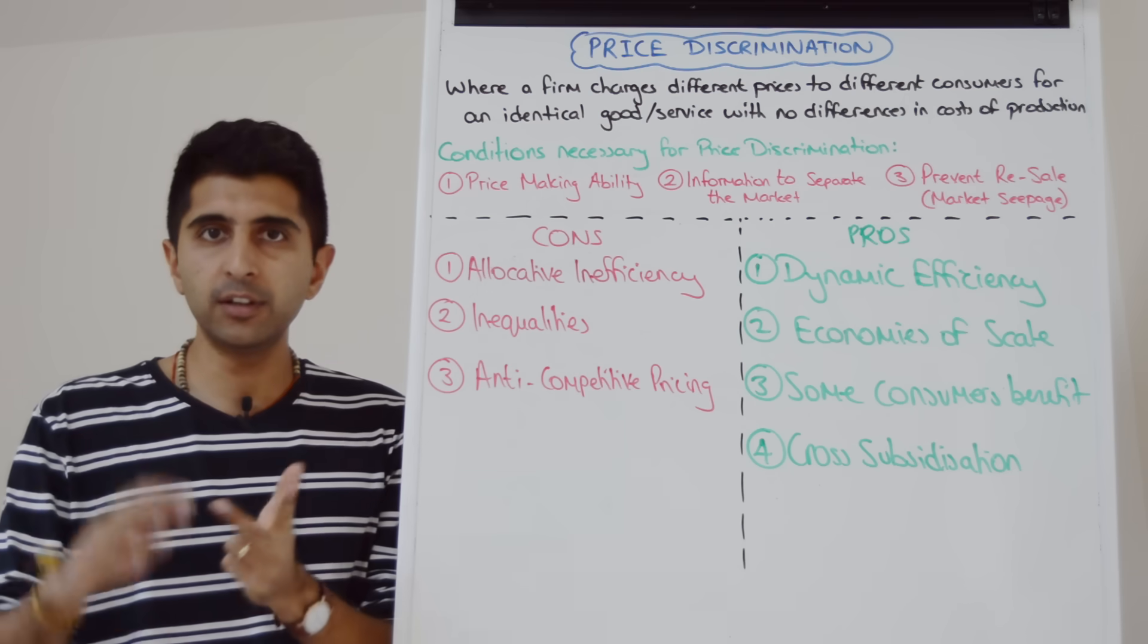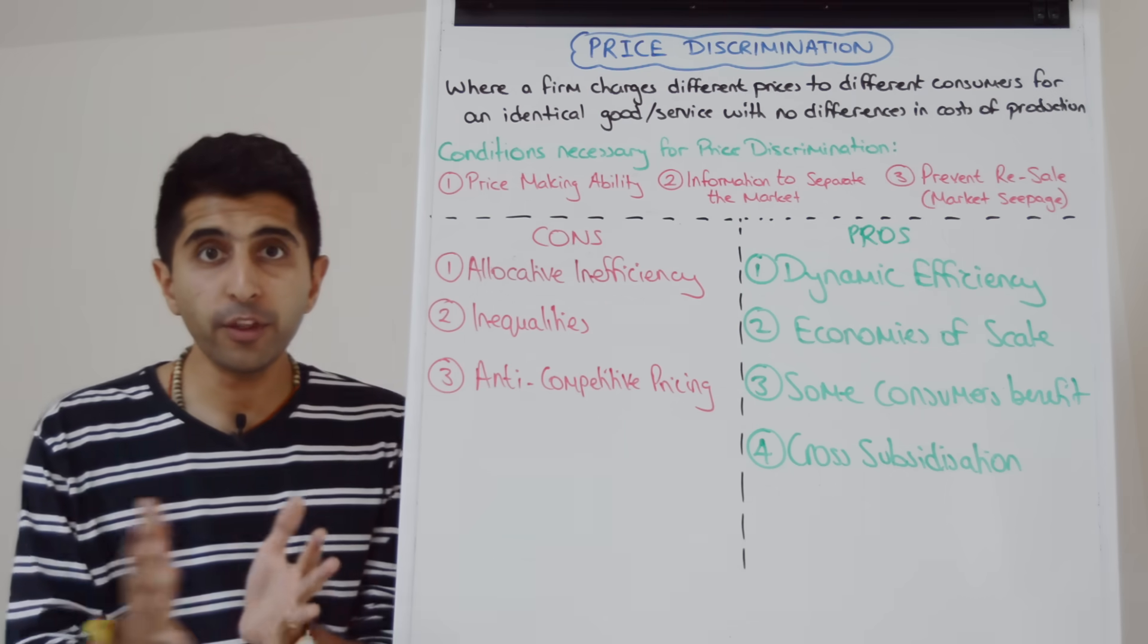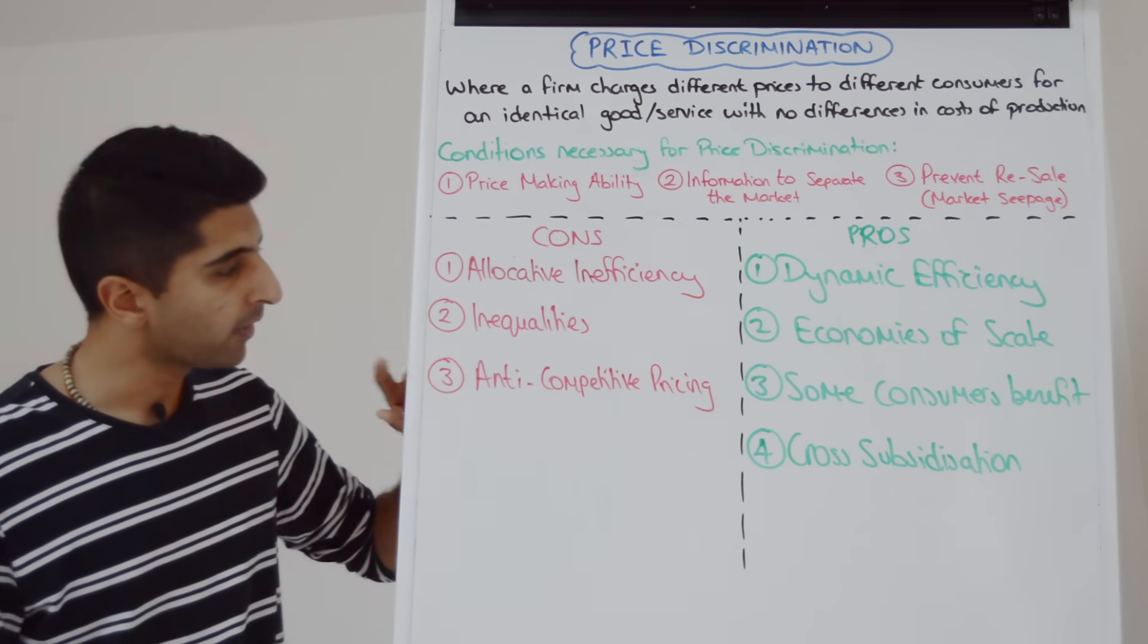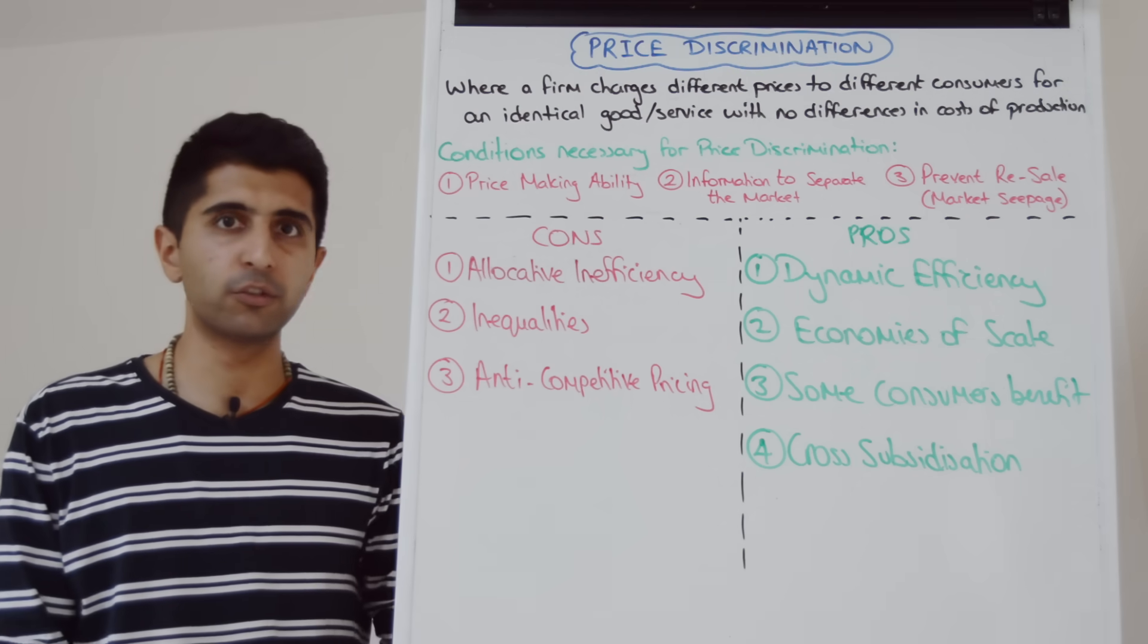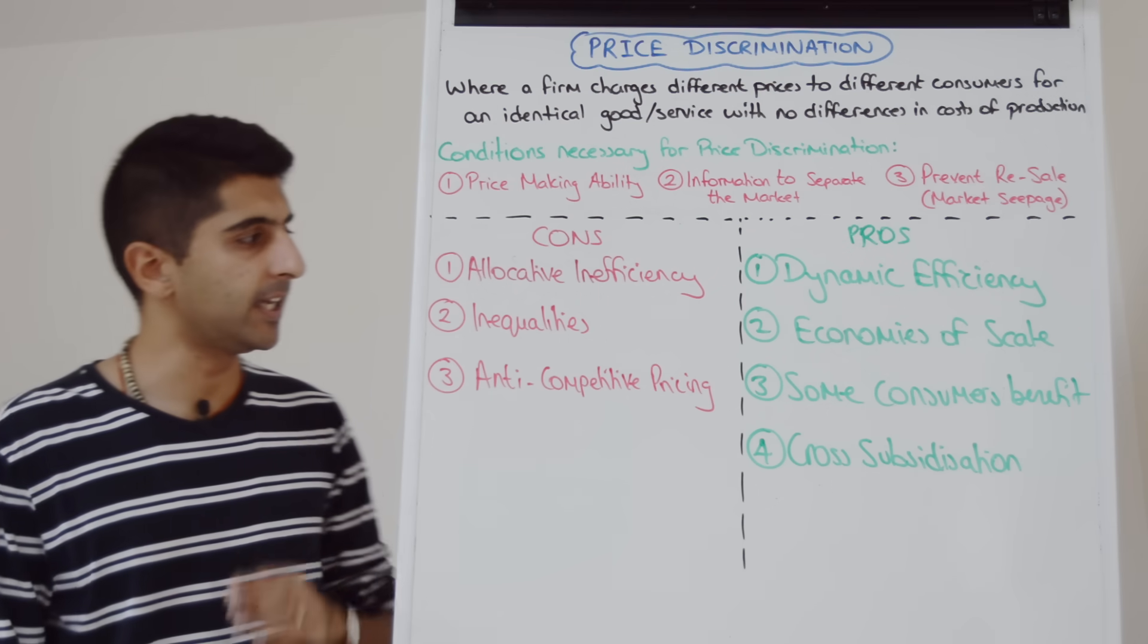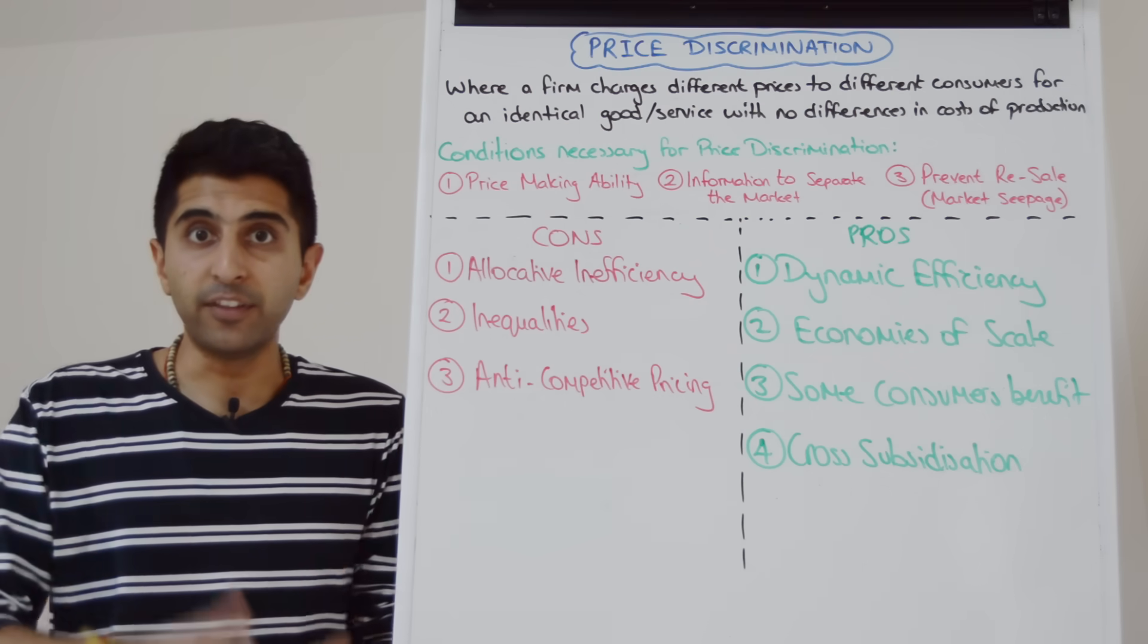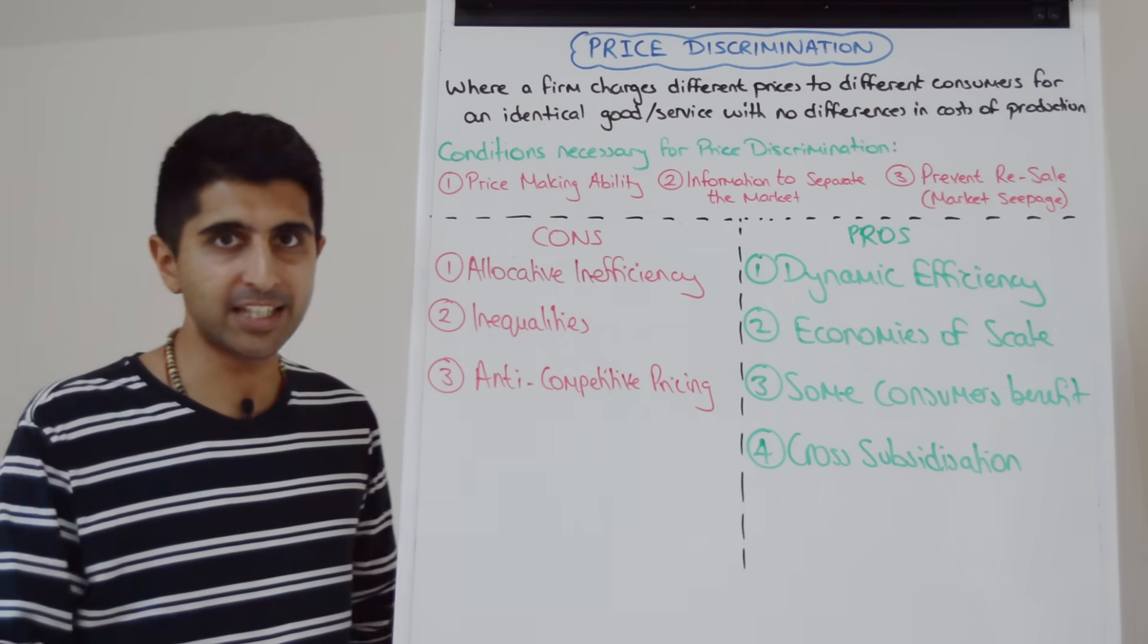Again, first-degree price discrimination, the inelastic market segment of third-degree price discrimination. Who are those consumers? If those consumers are those on lower incomes, it can really widen income inequality in society. And also the anti-competitive nature of pricing. This really comes down to third-degree price discrimination and looking at what's happening in the more price elastic market segment here. And saying, well if prices are driven down there, if those lower prices are driving out competitors, then this firm is going to be left with pure monopoly power. We don't want that at all. That could be very anti-competitive.